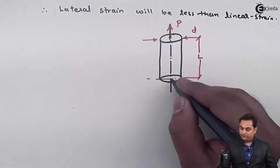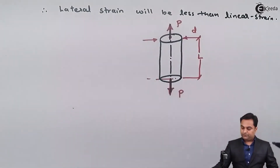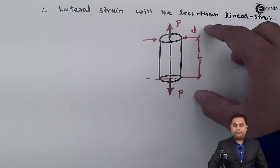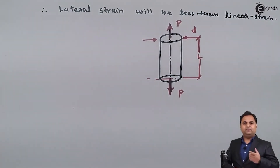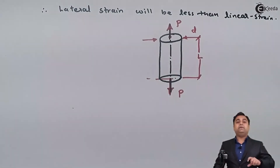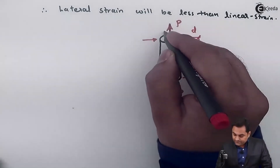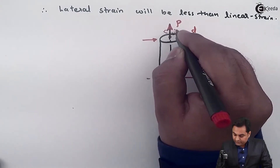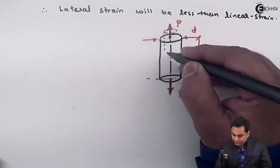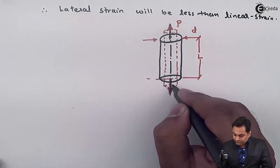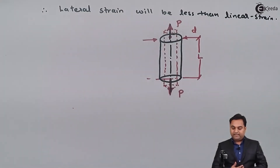If we apply a pull type of load on both sides of this bar, because of the action of this pull type of load the length of the bar will go on increasing and its diameter will go on decreasing. Here I can explain this by drawing a diagram showing the bar deformed when subjected to pull.